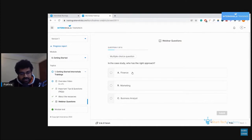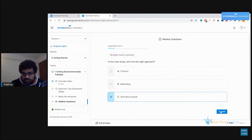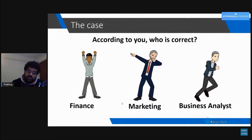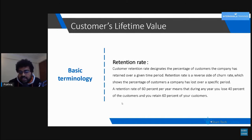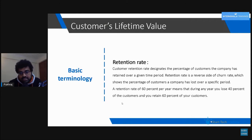The correct answer is C — the business analyst or John. What kind of information do we need for making a data-driven business decision? The first concept is retention rate. Suppose 100 customers join our membership. Out of those 100 customers, some percentage will again buy a second month's membership at the full price, since we were giving a discount only for the first month.